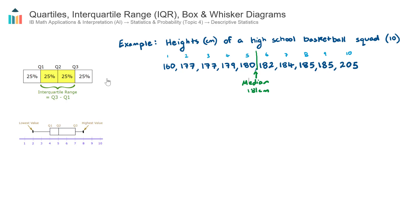Now the lower quartile, Q1, is essentially the median of the lower half. So if I consider these first five players here, the median, which will be this middle number here, player 3, 177, we call this the lower quartile Q1. So my lower quartile is 177 centimeters.